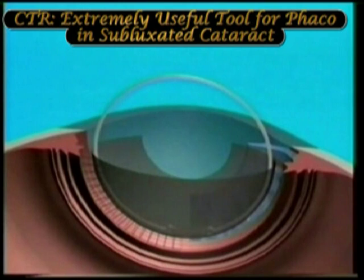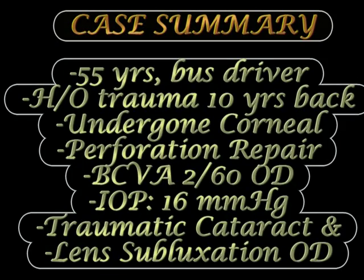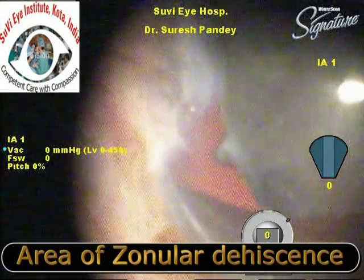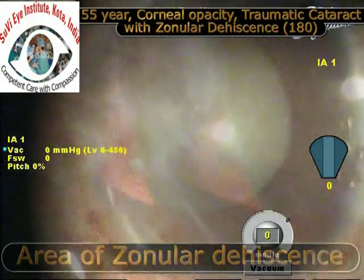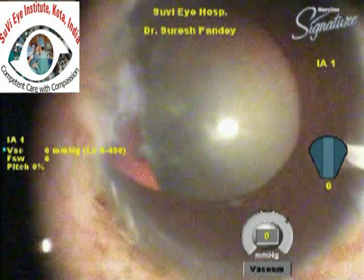The CTR makes the capsular bag uniformly dilated and circular. In this video we discuss the case of a 55-year-old bus driver who had a history of trauma 10 years ago and had undergone corneal perforation repair. He presented with a traumatic cataract with lens subluxation in the right eye and a best corrected visual acuity of 2/60. The area of subluxation is visible, along with a corneal scar where the perforation repair was done.